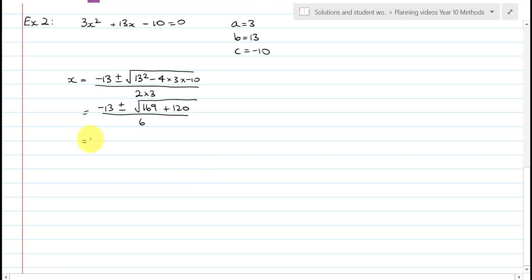And so, this is equal to negative 13, plus or minus the square root of 289, all over 6, which is equal to, and I'll just check that square root, because I suspect that the square root of 289 is actually 17. And it is, so it's negative 13, plus or minus 17, over 6, which is equal to negative 13, plus 17, over 6, or negative 13, minus 17, over 6.